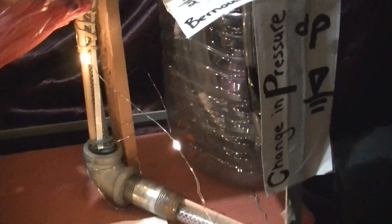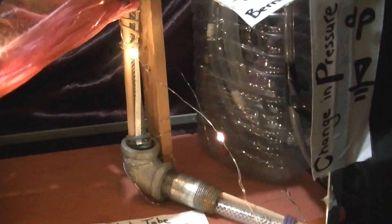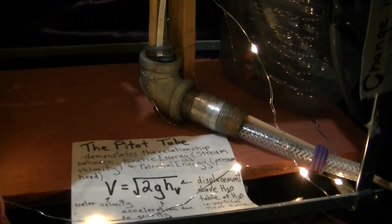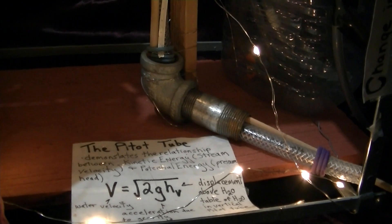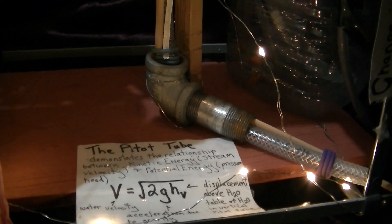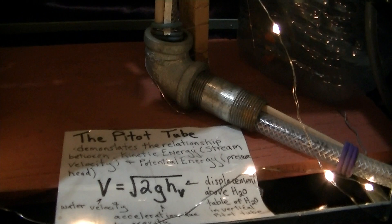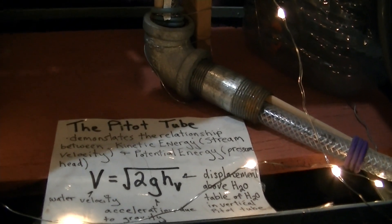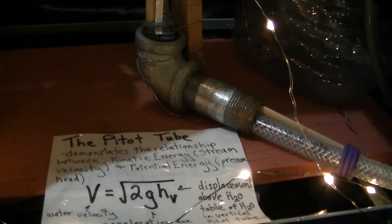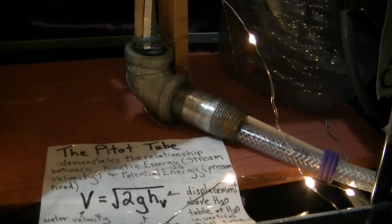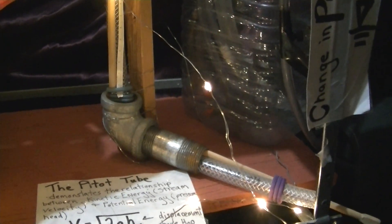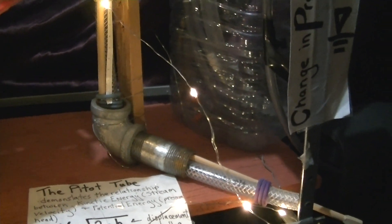One tool that can be used in this understanding is a pitometer, or a pitot tube. This was a homemade version that I built in order to understand this equation — how the displacement of water can determine the velocity or kinetic energy component of a stream system.